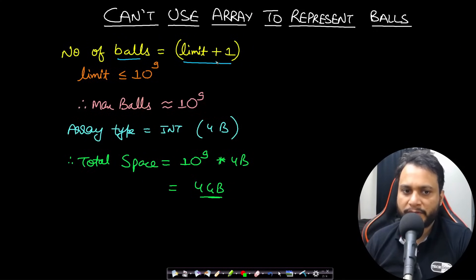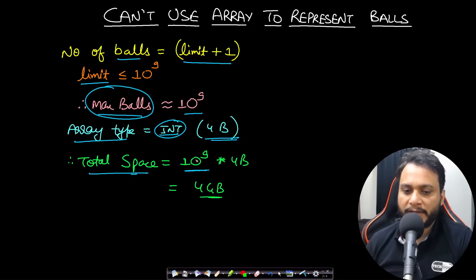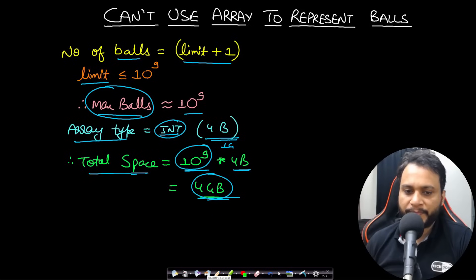We also can't use a plain array for storage. The number of balls is limit+1, which can be up to 10⁹. Storing integer colors at 4 bytes each gives 10⁹ × 4 = 4 GB of space, which is completely infeasible. So space complexity is also a big constraint of this problem.